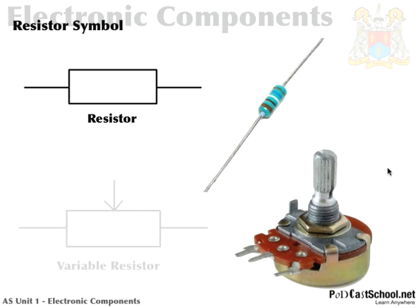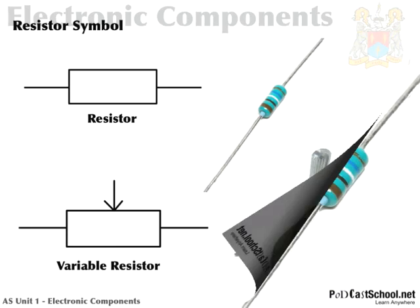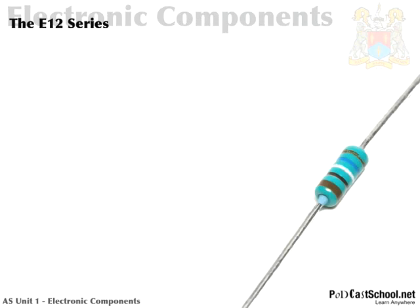The resistor symbol is just a rectangle, and the variable resistor is the same with an arrow on it — sometimes you see that with an arrow right through it. Both are valid symbols. This would really be the symbol for a potentiometer, which is essentially the same thing. Both the arrow-through and the separate-arrow symbols represent variable resistors or potentiometers.